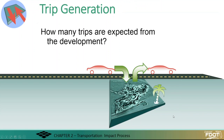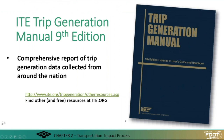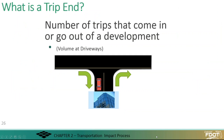I'm going to talk about trip generation — really determining the impacts of a development on the transportation system. It can be confusing at times, so we need to know exactly the size of the development and the trips generated from that specific development. One of the methodologies we use is the ITE Trip Generation manual, which has been updated to the 9th edition.